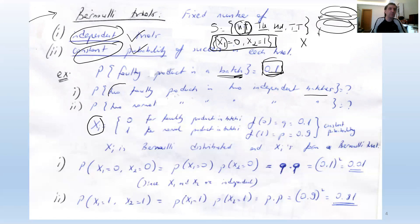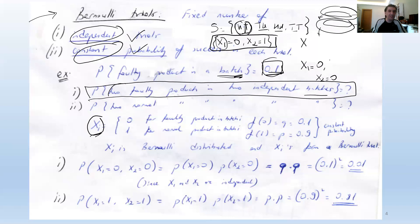Two faulty products in two independent batches means X₁=0 and X₂=0. Two normal products means X₁=1 and X₂=1. We define Xᵢ=0 for faulty product in batch i, and Xᵢ=1 for normal product. The PMF at zero, f(0), equals 0.1 for any Xᵢ, and f(0) for X₁ equals f(0) for X₂ = q = 0.1. Therefore p = 0.9.